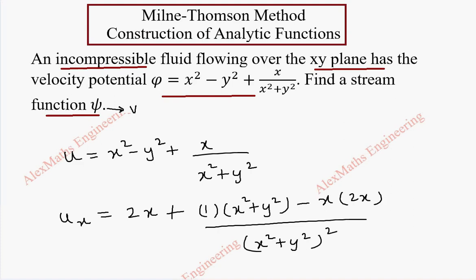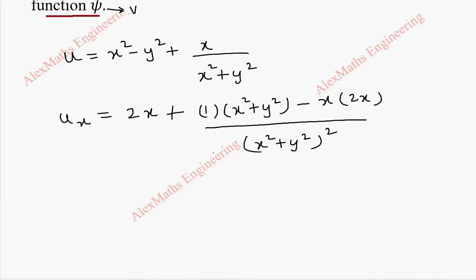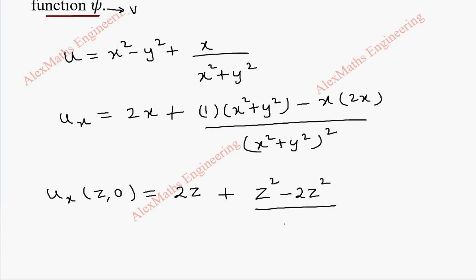When we take the partial derivative with respect to x, y is treated as a constant. Now ux evaluated at (z, 0): the first term is 2z. This will become z² + 0, minus 2z². This is z² whole square because y is 0. So finally we are left with 2z minus z², and after cancelling we get minus 1 by z².